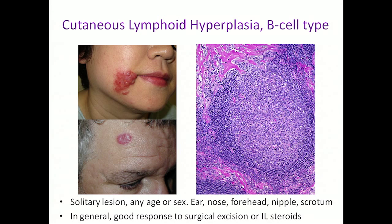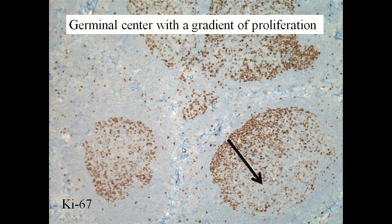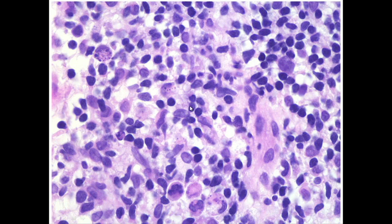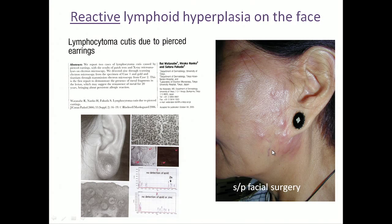Typical cases of cutaneous lymphoid hyperplasia tend to be single lesions, tend to occur at specific sites like the ear, nose, nipple, and scrotum, and respond well to surgery. You're going to find germinal centers that look completely normal — not much irregularity. They have this gradient of growth reflecting a benign morphology. Histologically, you see tingible body macrophages, centrocytes, mitotic rate — typical morphology of a germinal center.